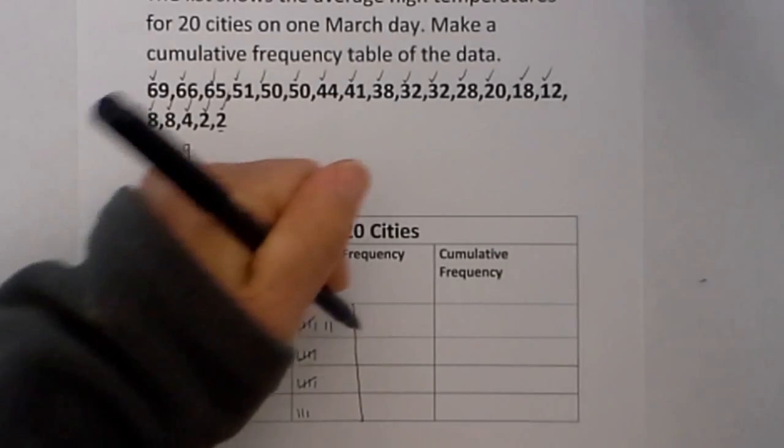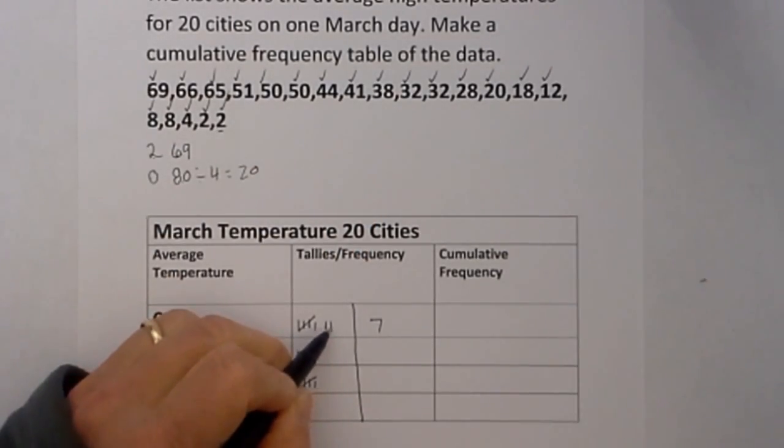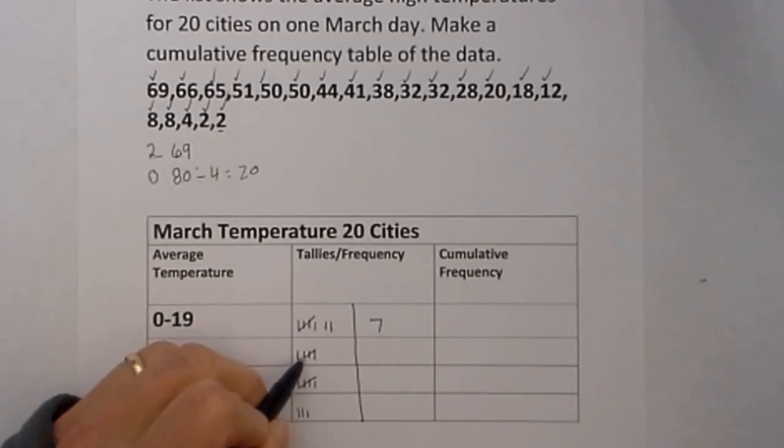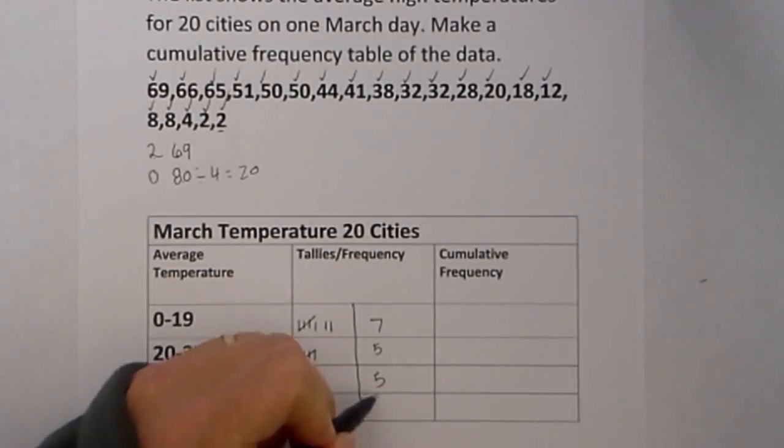I then total my frequency. I have 7 here. How did I know that? I went 5, 6, 7. I know I have 5 because of this mark. I have 5 here and then 3 there.